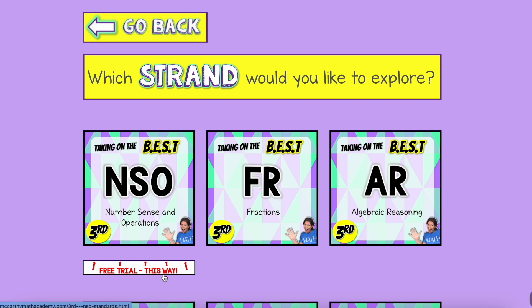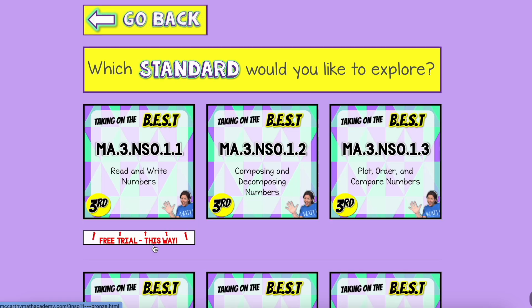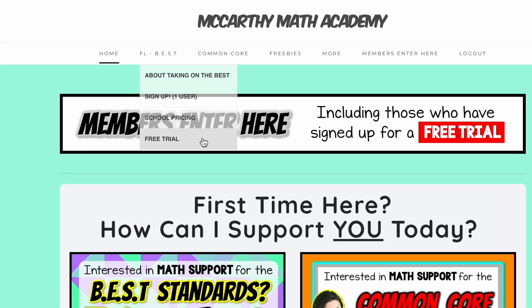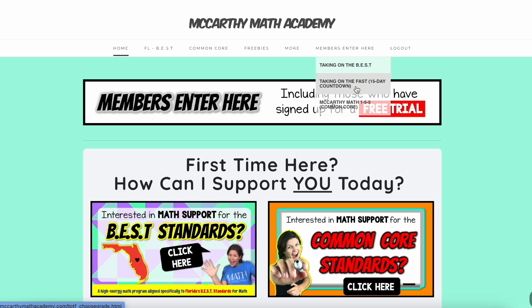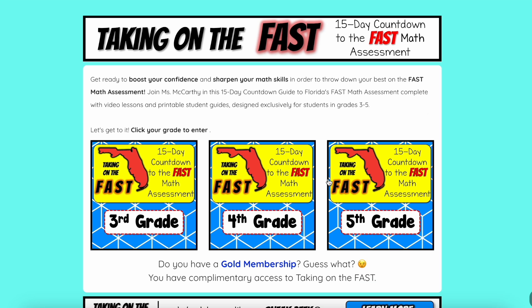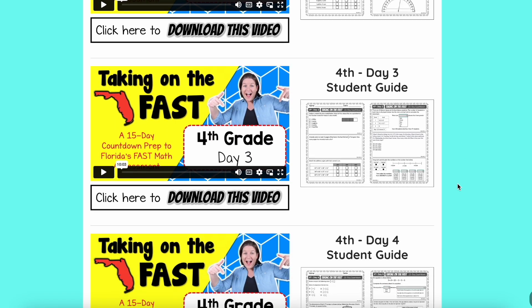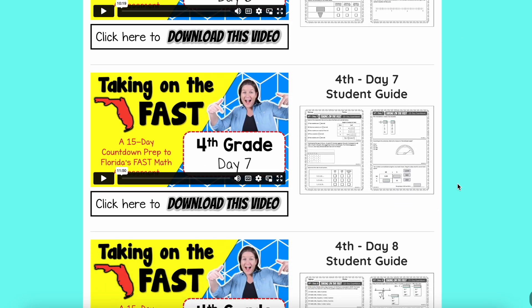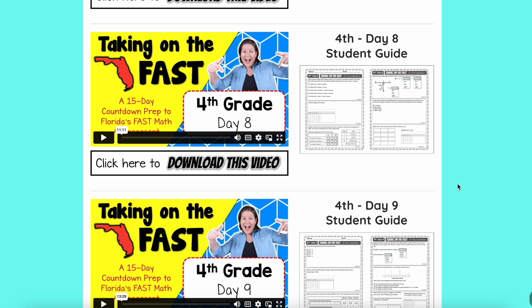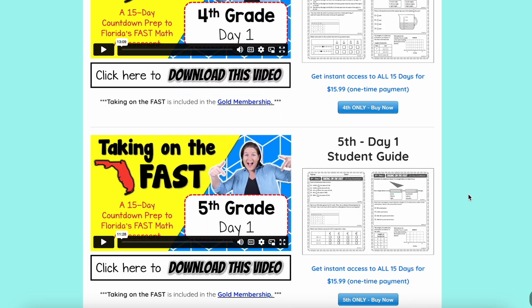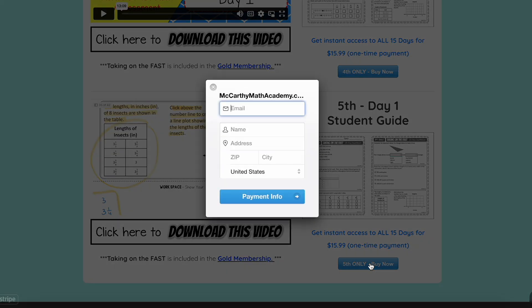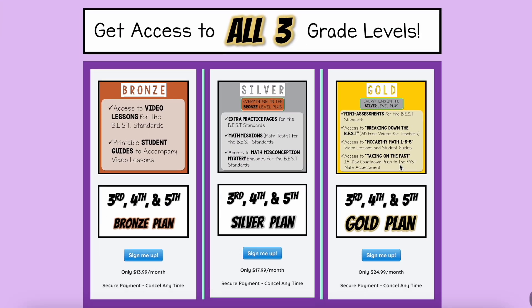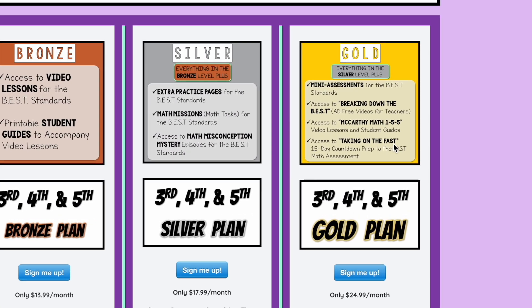Would you like to take Taking on the Best for a test drive? You can sample one standard per grade to find the right plan for you by requesting a free trial. And if you're gearing up for the final fast math assessment of the school year, definitely check out Taking on the Fast, a 15-day countdown series with video lessons and fast style math problems. Start with a sneak peek of day one, and when you're ready, you can make a one-time purchase. And if you're thinking about the gold plan for Taking on the Best, good news—Taking on the Fast is included in your membership.